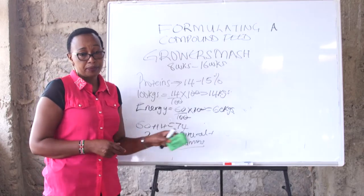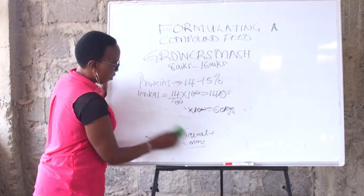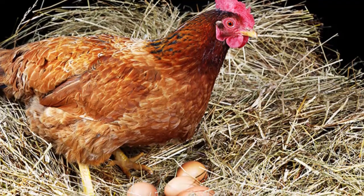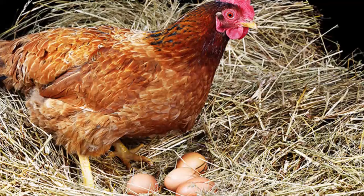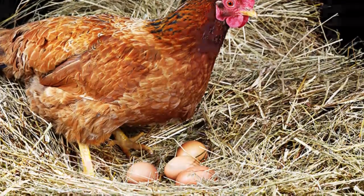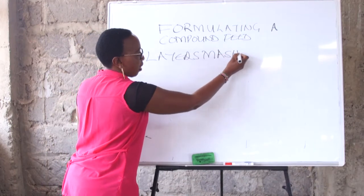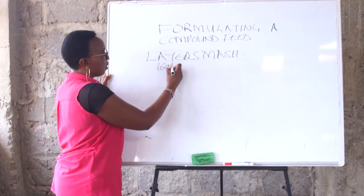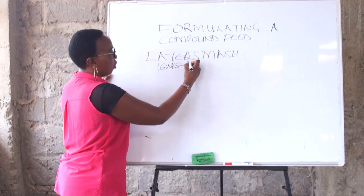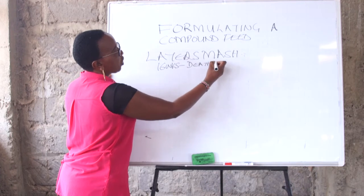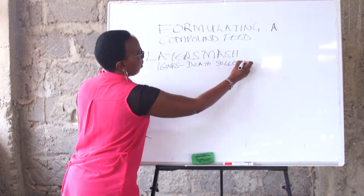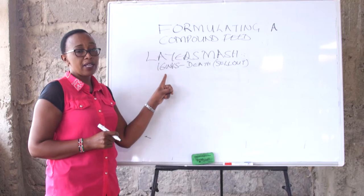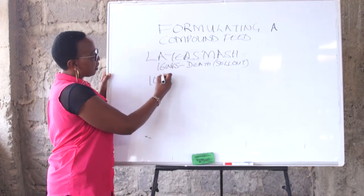Now let's go to the layer bird. We have grown our bird from the chick stage, through the growing stage, and now we have the layer bird — the bird that is now laying. The feed we make is called the layer mash. The layer mash should be given to the bird from 16 weeks to the time when you sell your bird. But for economic purposes, don't give your birds layer mash until they have given 10% eggs.